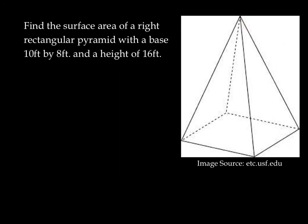Next one's going to be a bit of a challenge here. We're going to look at a right rectangular pyramid with a base of 10 feet by 8 feet and a height of 16 feet. So this time we have a base of 10 feet by 8 feet. And our height that's down the middle is 16 feet. That means we don't know our slant height.